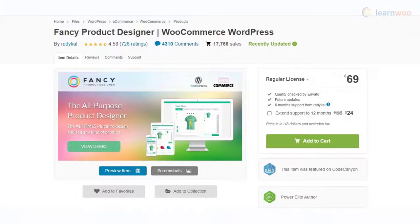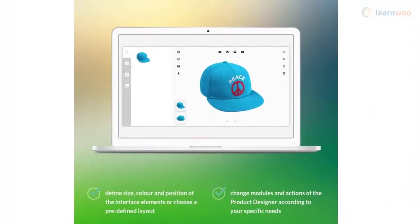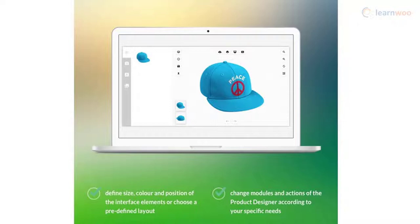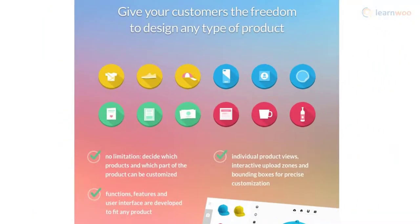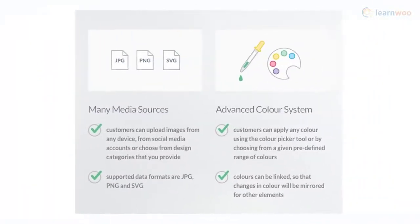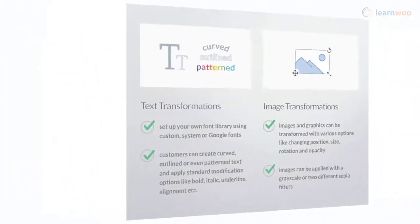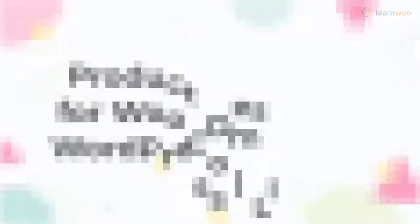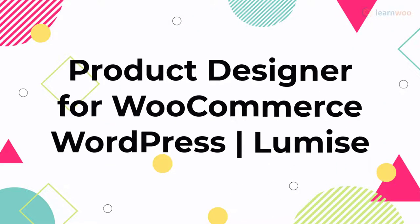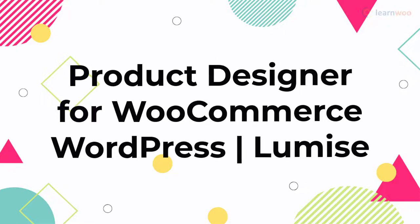Fancy Product Designer is one of the most flexible WooCommerce product designer plugins. You will be able to decide which products you want to offer the personalization option and what part of the product to customize. Interestingly, it offers a layered system for design, which will help you keep track of the applied changes. It supports different file formats such as PNG, JPG, and SVG. The plugin also offers an advanced color system as well as interesting text and image transformations.